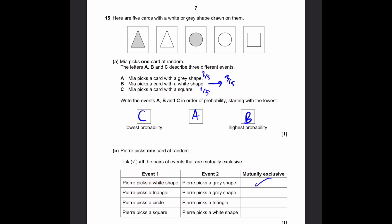Now, the second one. Pierre picks a triangle and Pierre picks a grey shape. Well, there is a grey triangle. So, it could be possible that event 1, triangle, and event 2, grey shape, are two at the same time. So, they're not mutually exclusive.